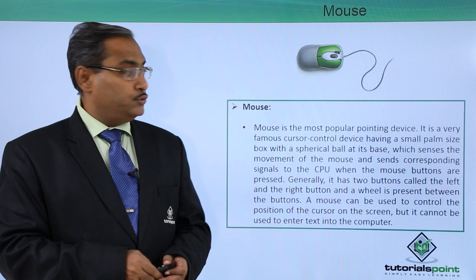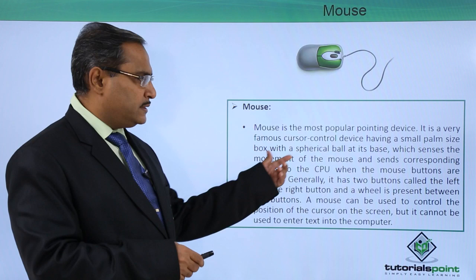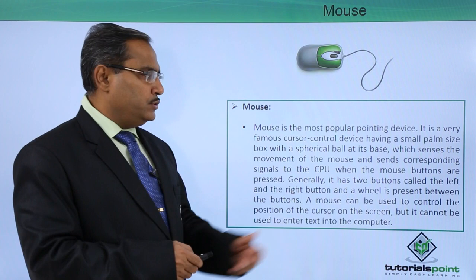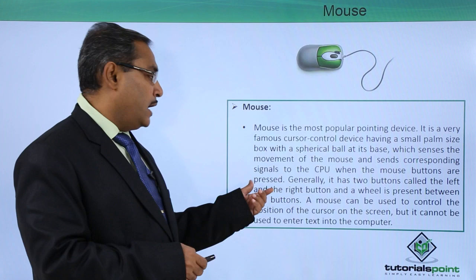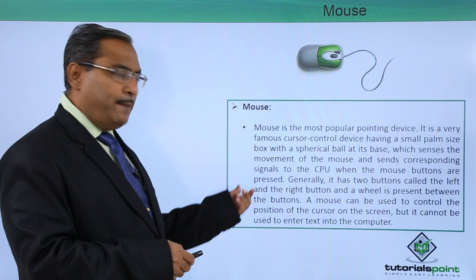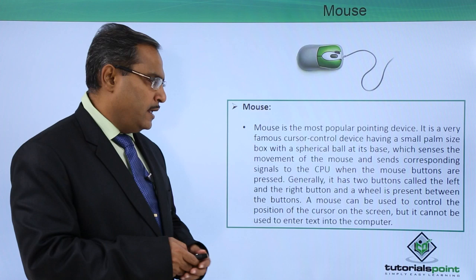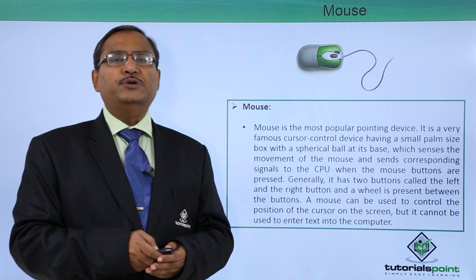Now we are going to discuss the mouse. Mouse is the most popular pointing device and a very famous cursor control device, having a small pump-size box with a spherical ball at its base which senses the movement of the mouse and sends corresponding signals to the CPU when the mouse buttons are pressed. Generally it has two buttons — the left button and the right button — and there is a scroll wheel present between them. A mouse can be used to control the position of the cursor on the screen, but it cannot be used to enter text into the computer; for that we use the keyboard.